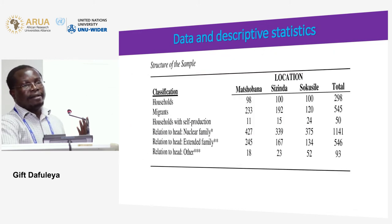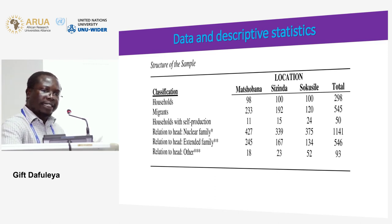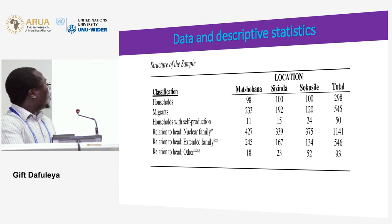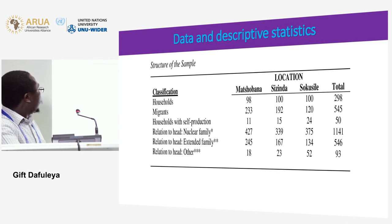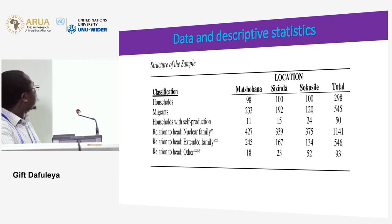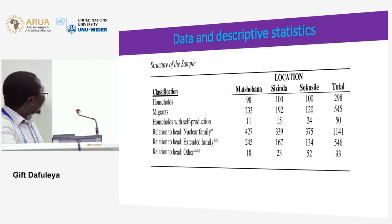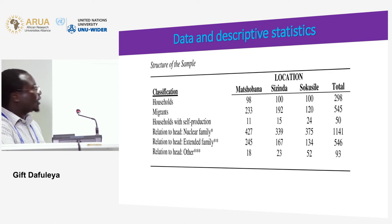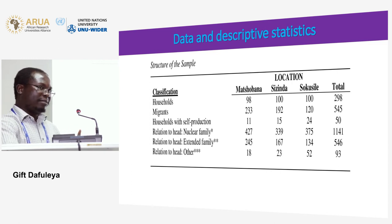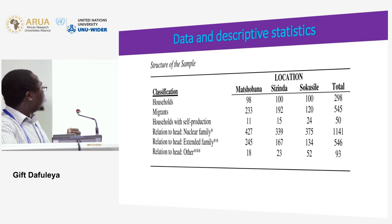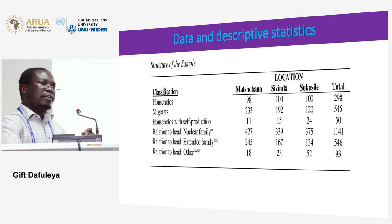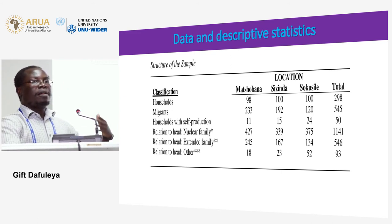We collected data in Zimbabwe on 300 households. One important observation is that migrant households — those with a large number of migrants — have fewer self-production activities. The lower the number of migrants, the higher the self-productive activities, which pictorially demonstrates the entrepreneurial shield that may prevent labor from migrating.